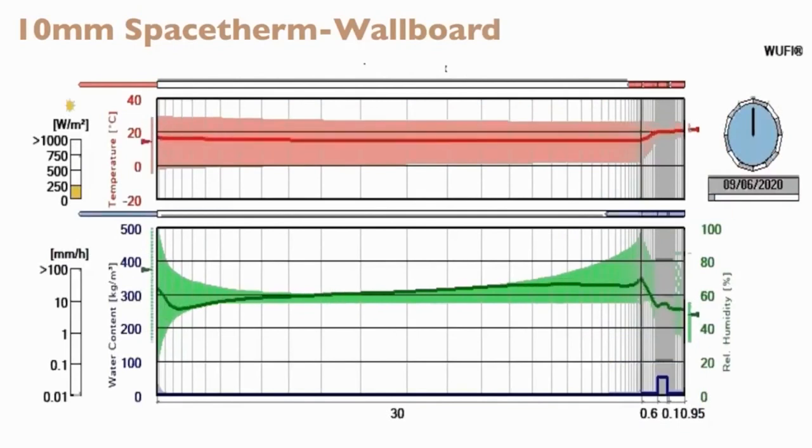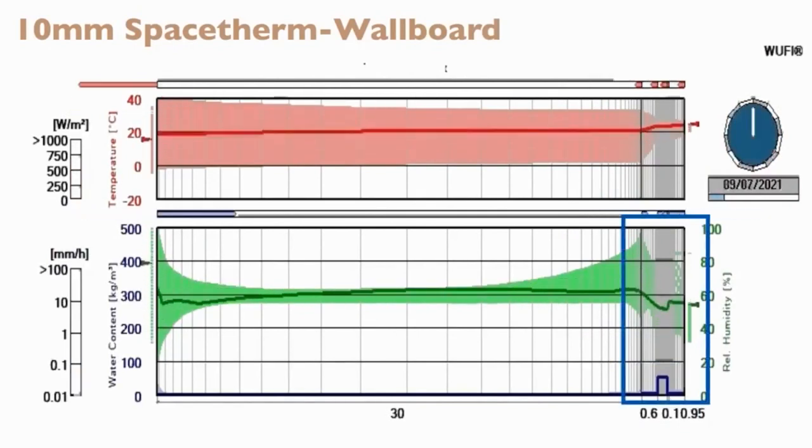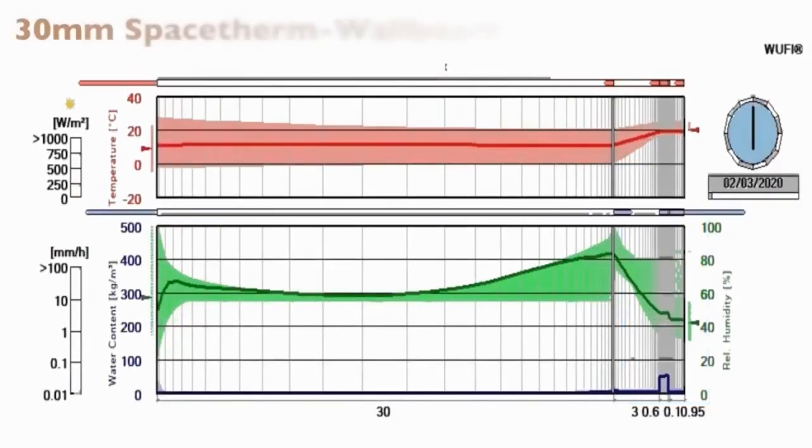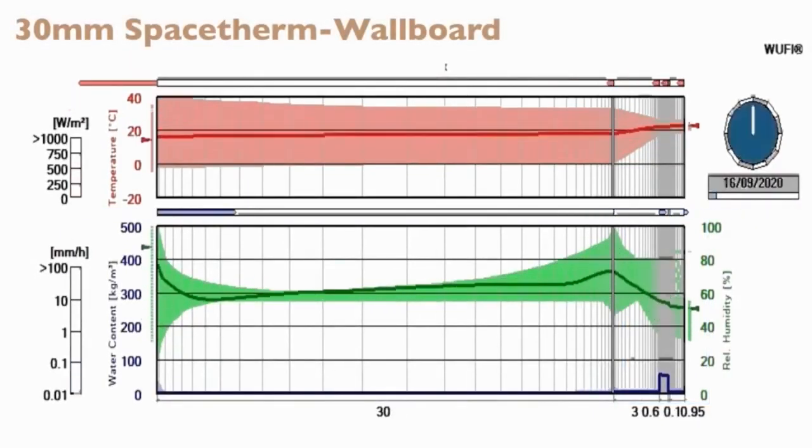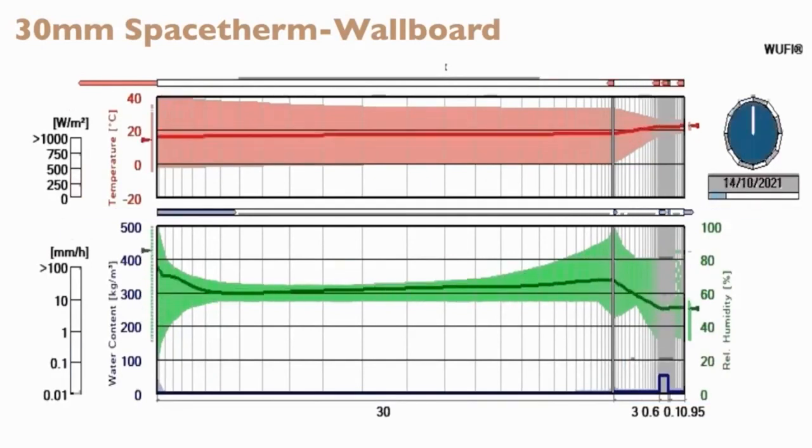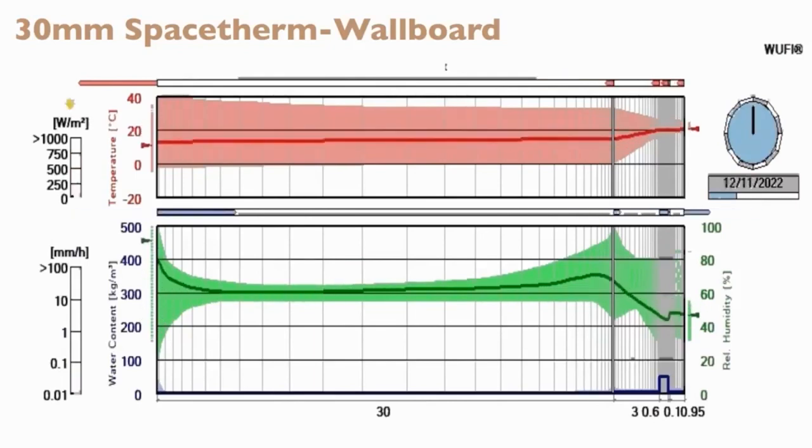In the next case, we can see that by introducing a vapour check into the SpaceTherm board, this serves to limit inward drying, increasing the relative humidity and actually increasing the overall condensation risk. The final case combines the moisture trapping effect with the increased relative humidity from the increased insulation thickness, giving the highest overall condensation risk of all of our four cases.